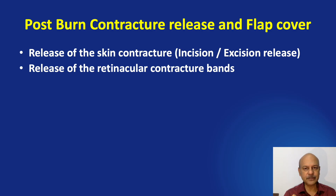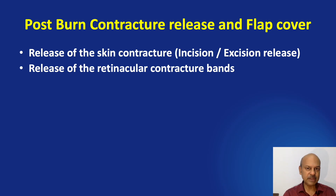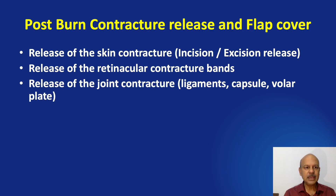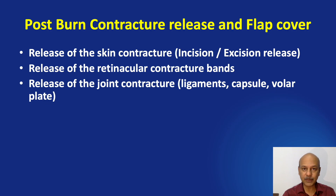Release of the retinacular contracture bands. Under the skin in a burn contracture, there is normally a retinacular system. This system we do not consider much when we talk about contracture release, but this must also be released — only when this is released will you not get a relapse of the contracture. The third step is the release of the joint contracture. A long-standing contracture of the skin may result in long-standing contracture of the joint, the ligaments, and the volar plate if it involves the proximal interphalangeal joint.